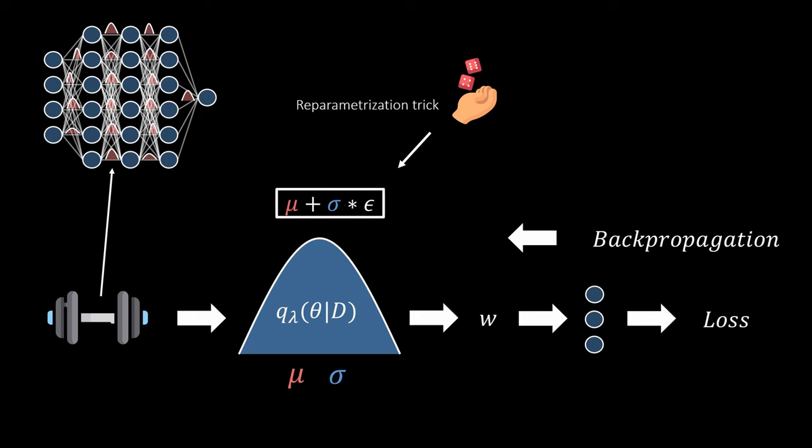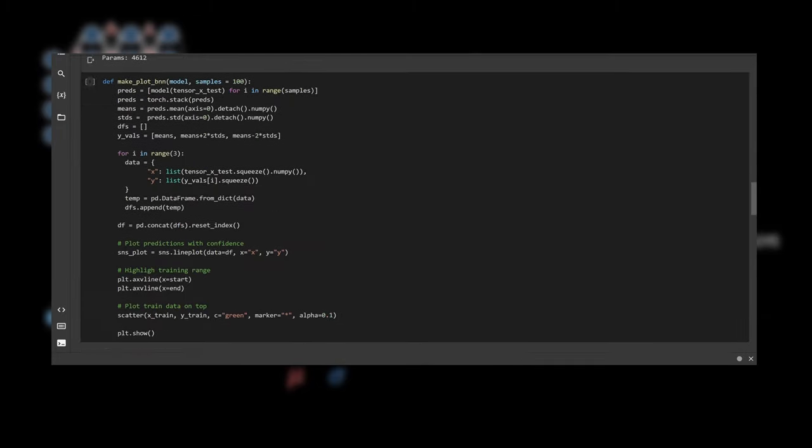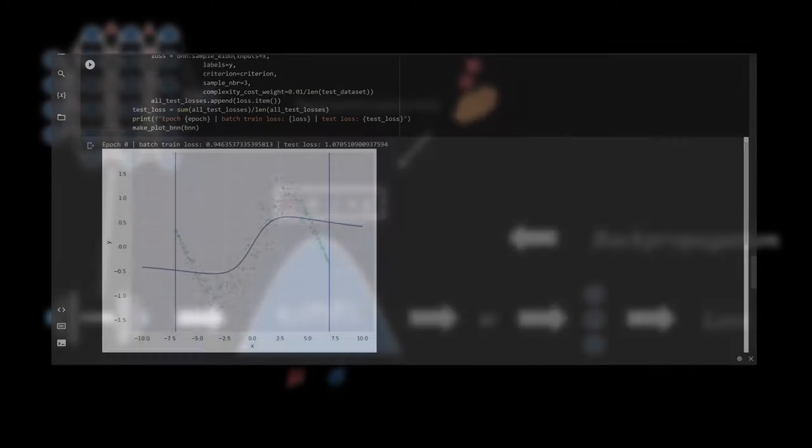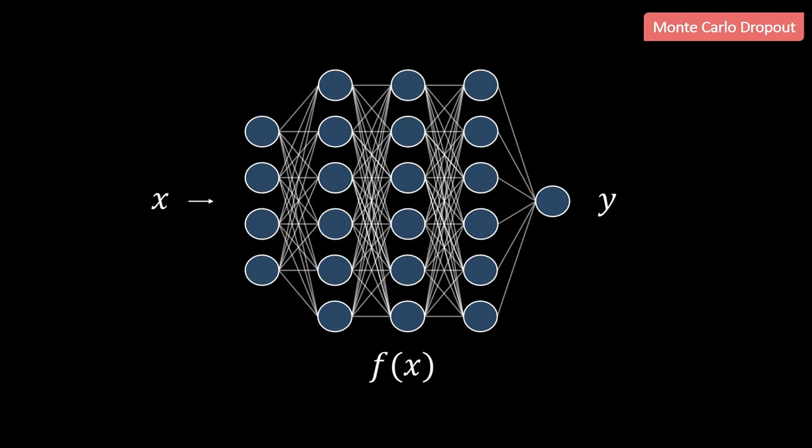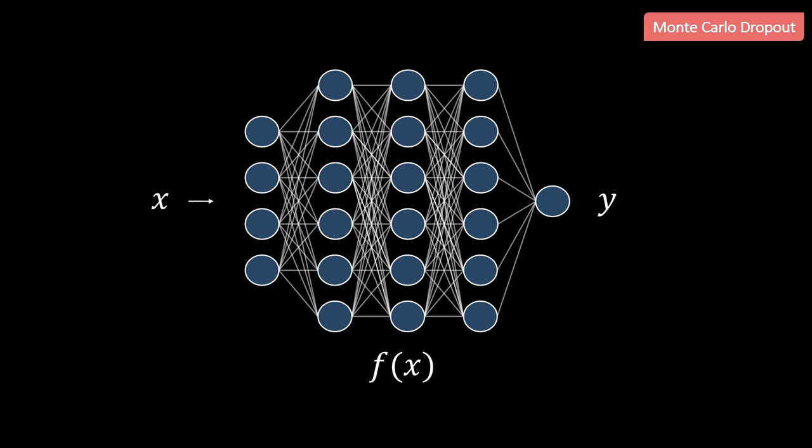And this is more or less the full approach how we can fit Bayesian neural networks using variational inference. Now this was all about BNNs in this theory part. In the next video we will look at the implementation for our dataset. BNNs are a great tool for estimating epistemic uncertainty but of course setting distributions on the weights also comes with downsides. The most obvious one is that the computational cost is much higher compared to a regular neural network. Not only the training takes longer but also inference is slower because you have to sample several times.